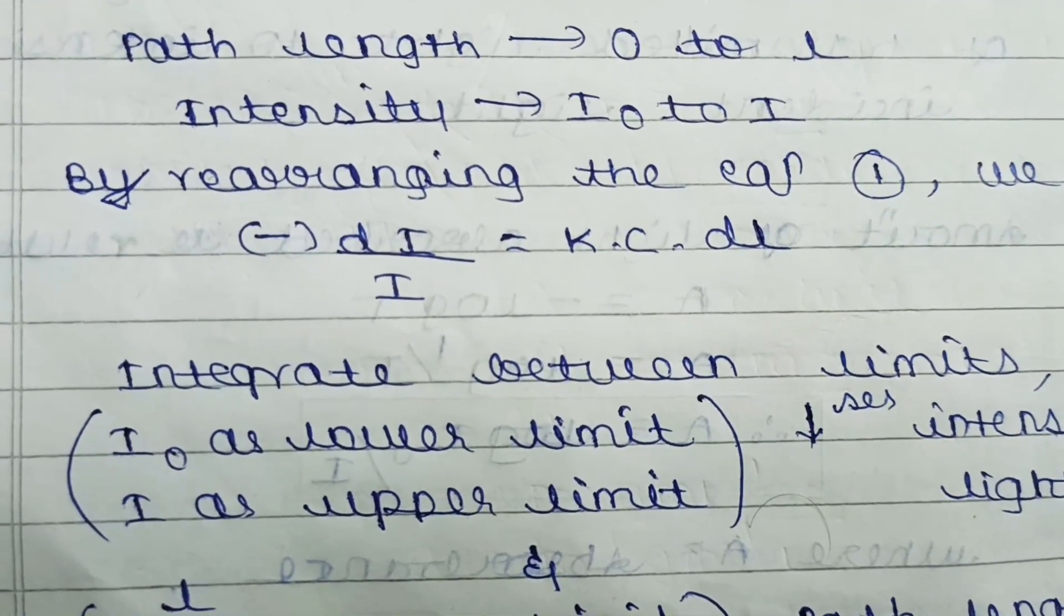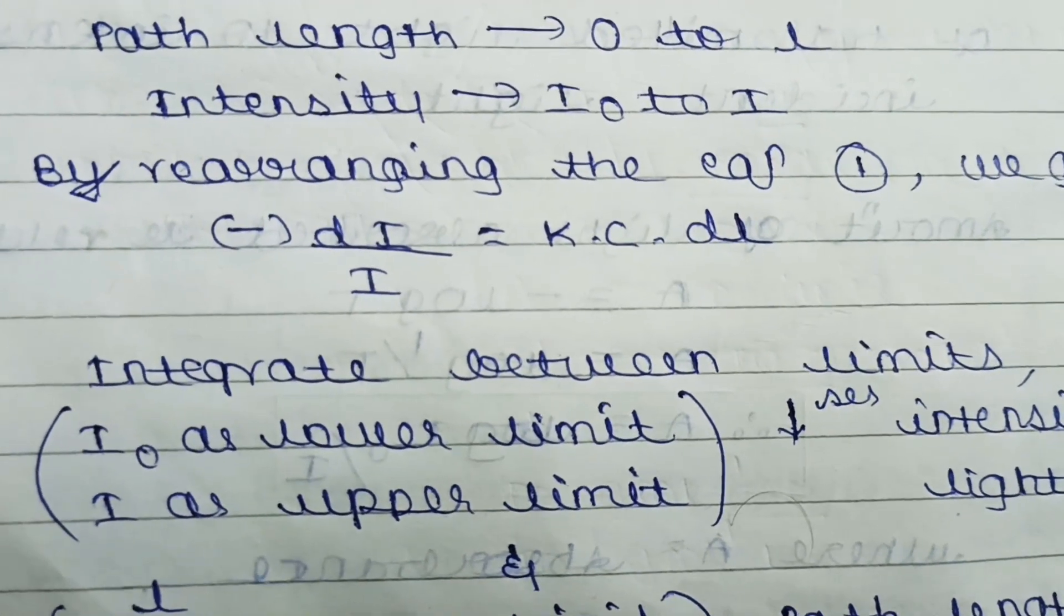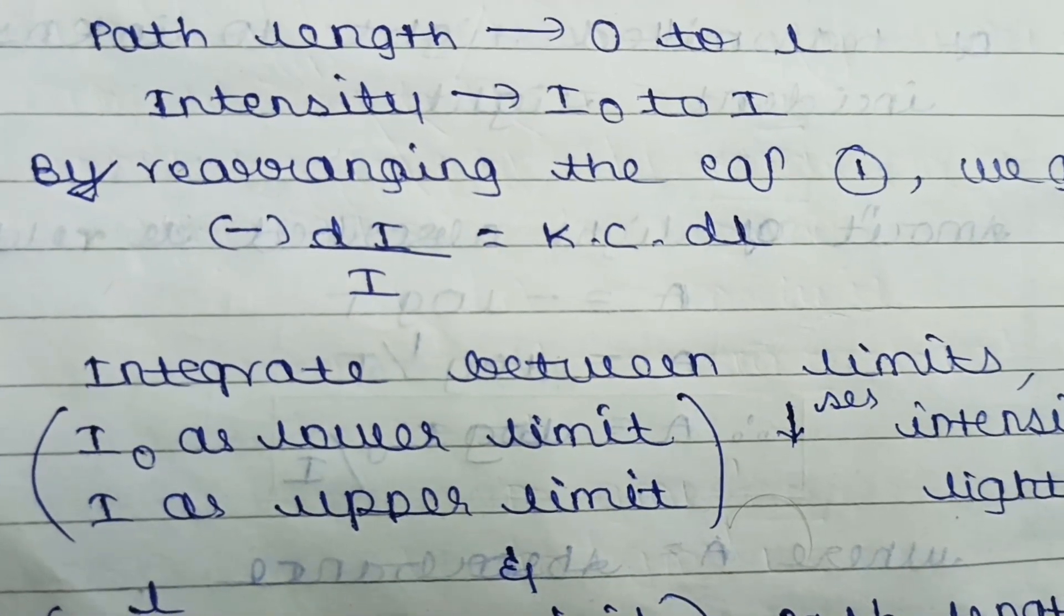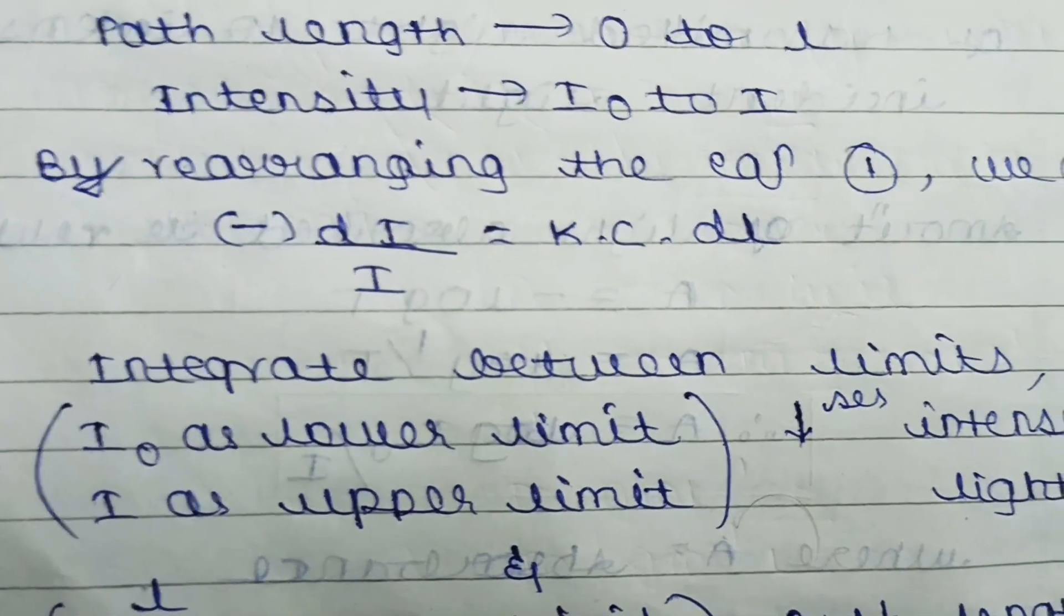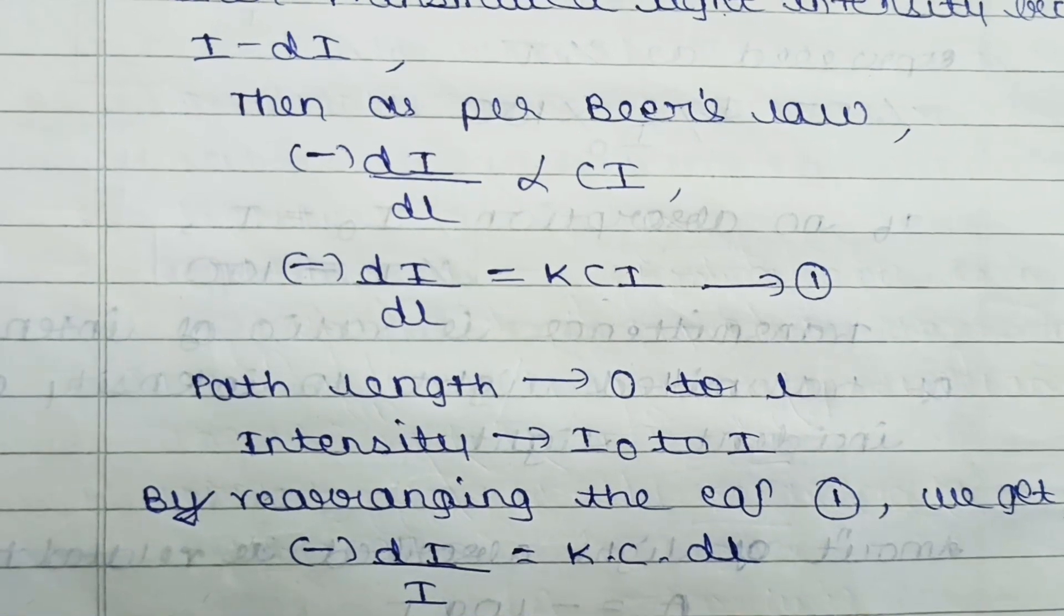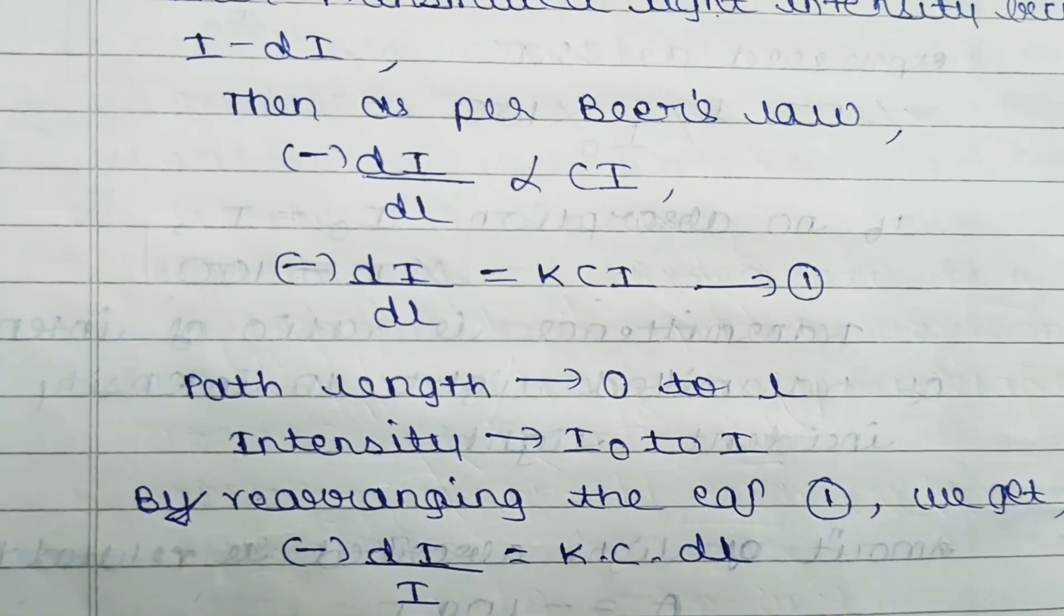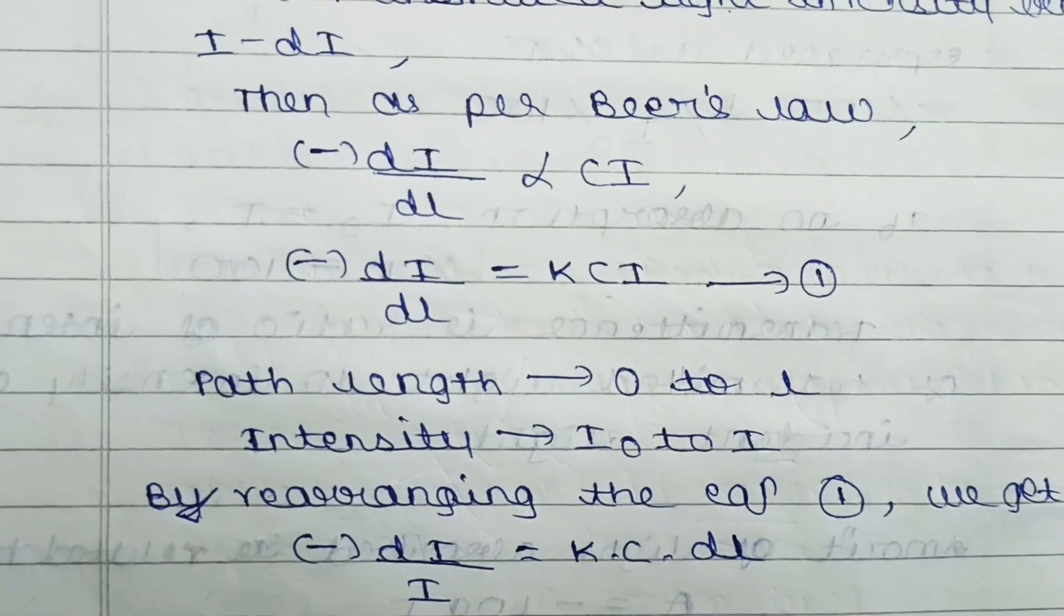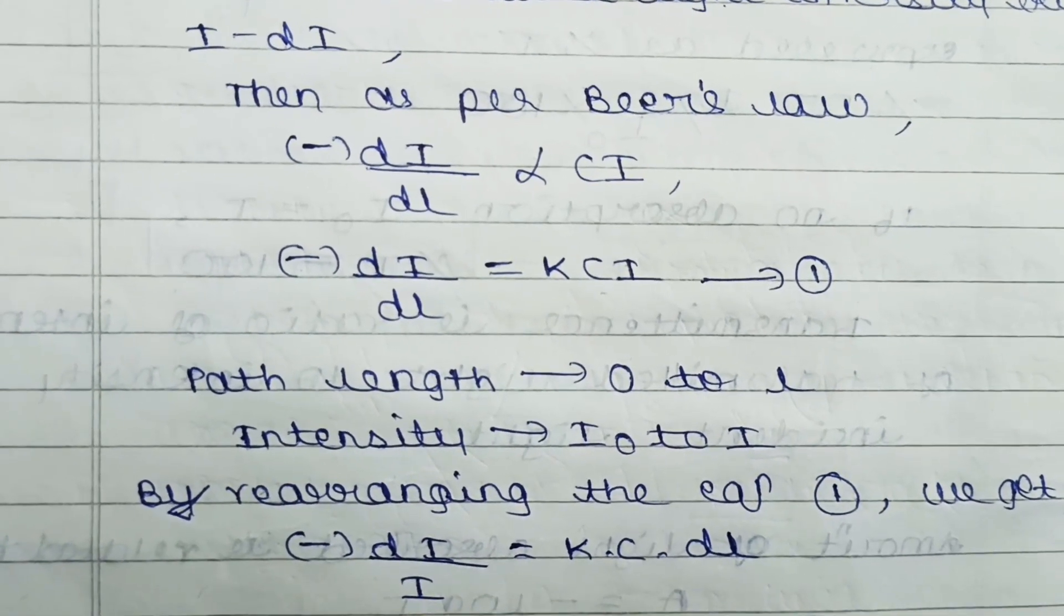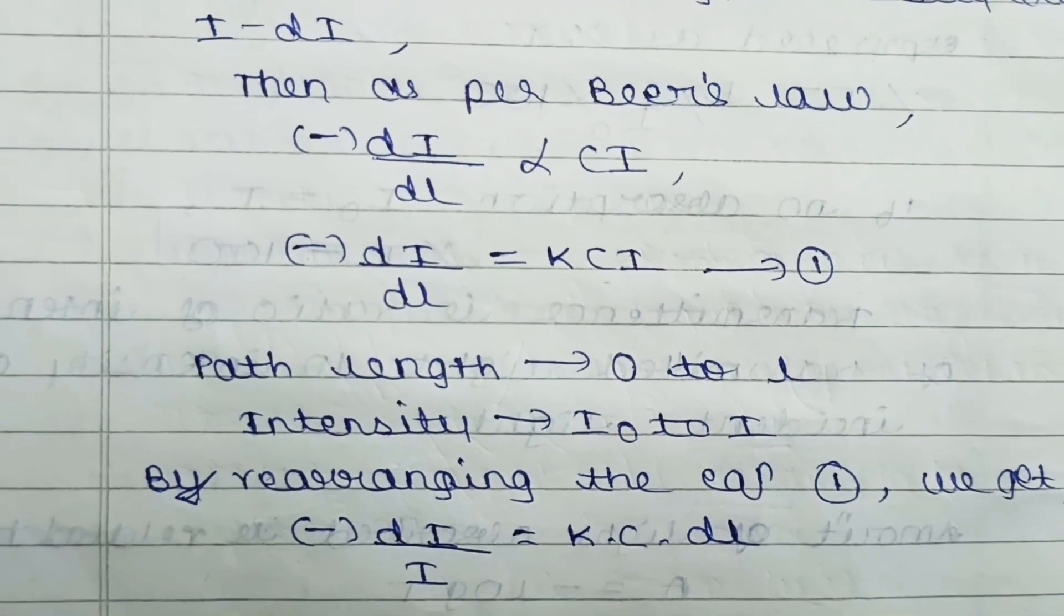Now forget about the one compartment, let's take the whole. Then path length becomes 0 to L. Intensity becomes I₀ converted to I. By rearranging equation number one, we get minus DI/I—I comes to the division side. DI/I equals KC times DL.